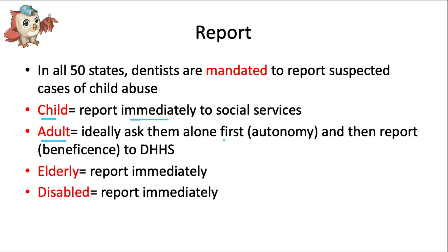For adults, ideally you would ask them alone first about your suspicions, respecting their autonomy, and then report following the principle of beneficence. Because they're an adult, we should respect their right to self-determination and confidentiality — if they don't want you to report, we must respect their wishes. For child abuse, call social services or child protective services. For adult abuse, call the DHHS (Department of Health and Human Services) or adult protective services for elderly and disabled individuals. Abuse is chronically underreported, so report those cases immediately.